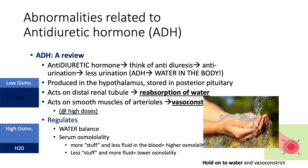If a patient has high amounts of ADH, what will their urine osmolality be? Lots of ADH means lots of water in the body and low serum osmolality, because all the water is diluting everything. Lots of water in the body means less water in the urine, so we're making more concentrated urine — more stuff in the urine. When we have lots of ADH, we will have high urine osmolality, and vice versa with low ADH.